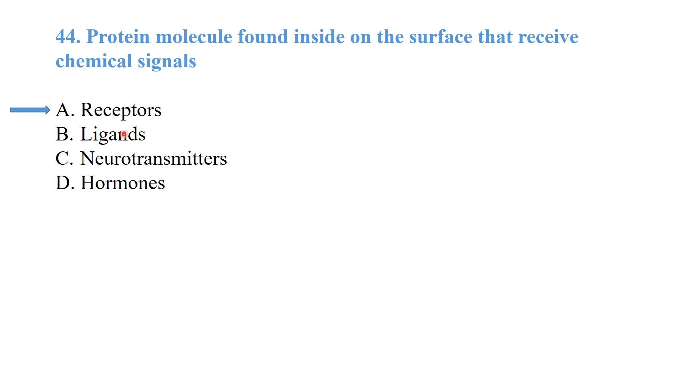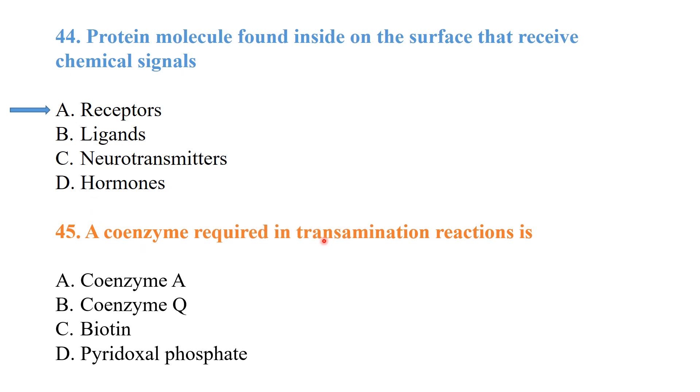Which coenzyme is required in transamination reactions? The coenzyme in transamination reactions is pyridoxal phosphate (vitamin B6).